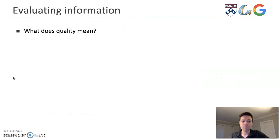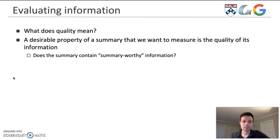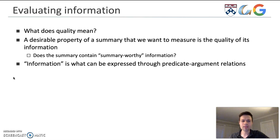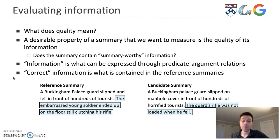When we say we are trying to evaluate the quality of a summary, what does that really mean? We think that a desirable property of a summary is the quality of its information — does the summary contain summary-worthy information? In this work, we define information as what can be expressed through the predicate-argument relations in the summaries, and the correct information is what is contained within the reference summaries.